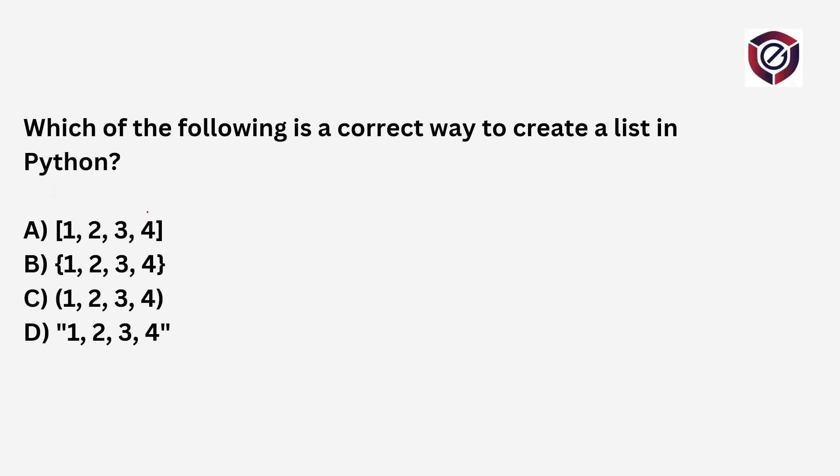Which of the following is the correct way to create a list in Python? Lists are sequences of elements created using square brackets. Curly brackets are used for sets, regular brackets for tuples, and quotes for strings. For creating a list, you must use square brackets. Thank you for joining.